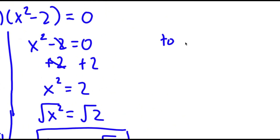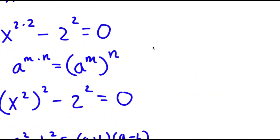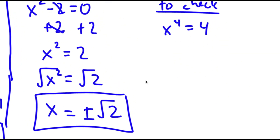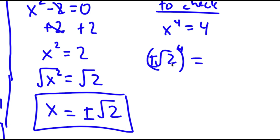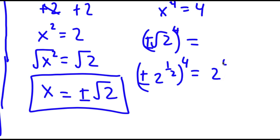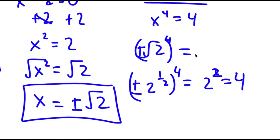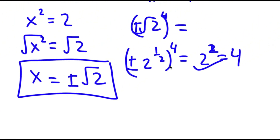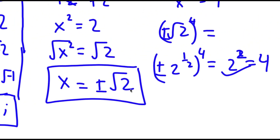Now I'm going to check. My original equation was x to the power of 4 is equal to 4. The square root of 2 to the power of 4 — because this is an even exponent, it doesn't matter if it is positive or negative, it's going to be the same result. The square root of 2 is the same thing as 2 to the power of one half, so I have 2 to the power of one half to the power of 4, which equals 2 to the power of 2, which equals 4. This works, and for the square root of 2i it's exactly the same thing. So my four solutions are correct.